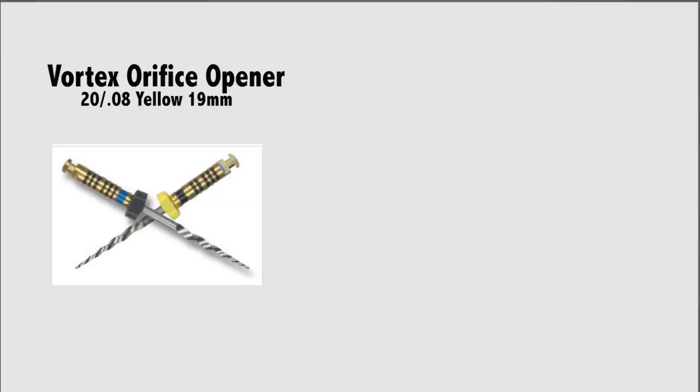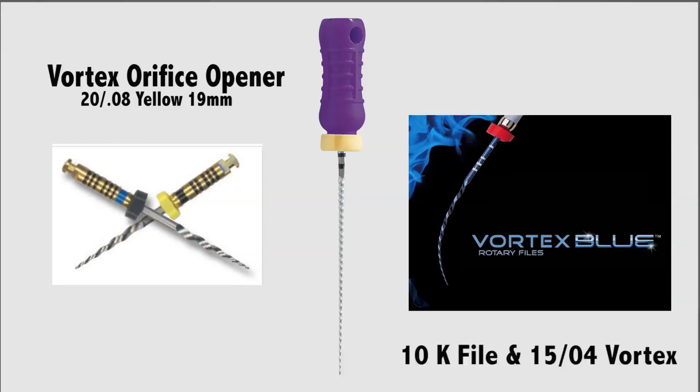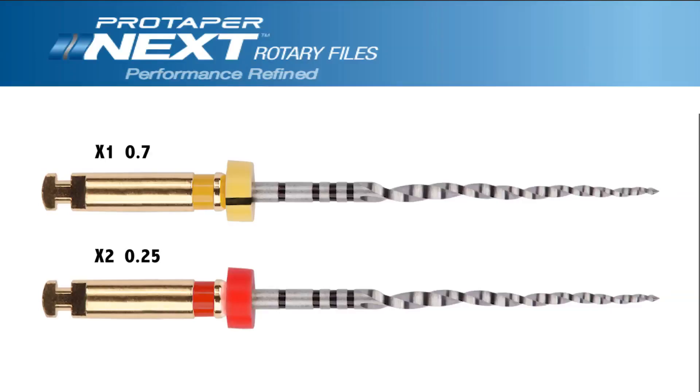Following access into the chamber, the Denton Triangle was removed with a 2008 vortex orifice opener, and the glide path was enhanced with a combination of 10 files and a 1504 vortex blue rotary file. All instrumentation, both hand and rotary, was done with 5.25% sodium hypochlorite in the root canal system. The area of resorption was near the mesial buccal canal orifice, and every attempt was made to preserve the tooth structure near the breakdown to minimize the risk for perforation. The final shape was made with ProTaper NEXT files 1 and 2.